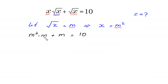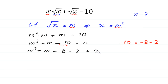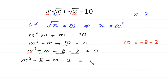Next, m squared times m gives m cubed, so we have m cubed plus m minus 10 is equal to 0. Now we split this negative 10 as negative 8 minus 2, giving m cubed minus 8 plus m minus 2 is equal to 0.